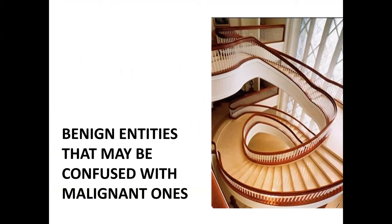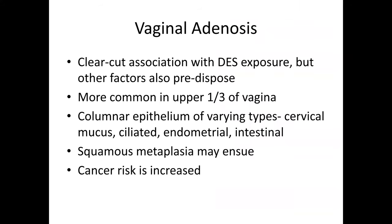We'll begin with the benign entities that may be confused with malignant ones — perhaps the most clinically important part of the lecture, because you don't want to give someone a malignancy when in reality they have a very benign condition. The first of these is vaginal adenosis. Historically, it has a clear-cut association with diethylstilbestrol (DES) exposure in utero, but other factors may also predispose to it. It typically occurs in the upper one-third of the vagina and consists of simple columnar epithelium — mucinous, ciliated, etc. — within the vaginal wall, with possible subsequent squamous metaplasia, leaving the patient at increased risk of carcinoma.